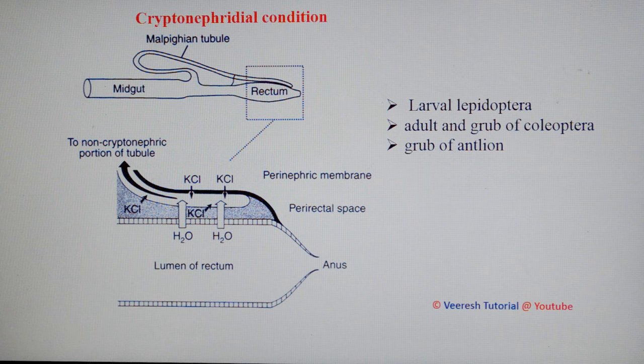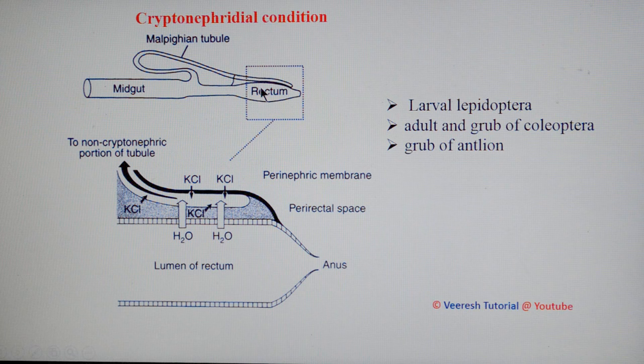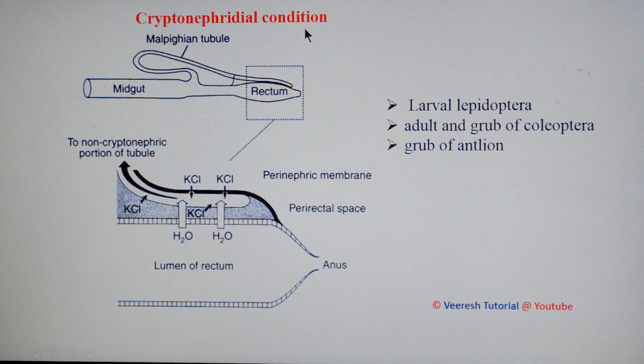In terrestrial insects, water is the main constraint. To conserve water, insects have a cryptonephridial arrangement in which the distal end of the Malpighian tubules is in close contact with the rectum and enclosed by a layer of perinephric sheath. This adaptation is more prevalent in insects that feed on dry food containing little water. This condition is called the cryptonephridial condition, and can be seen in larval Lepidoptera, adult and grubs of Coleoptera, and grubs of antlion.